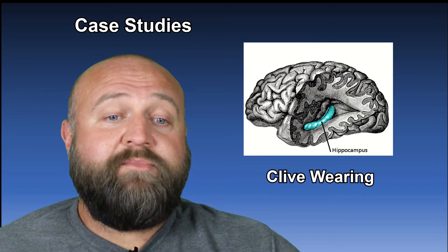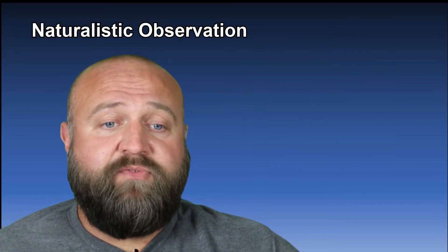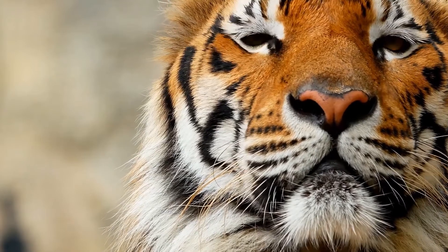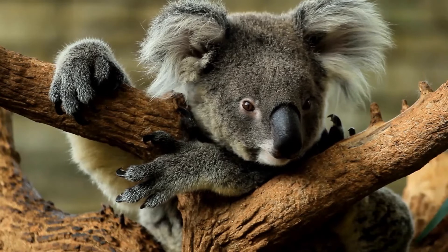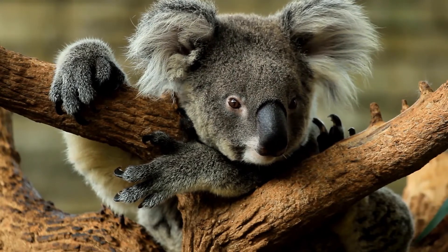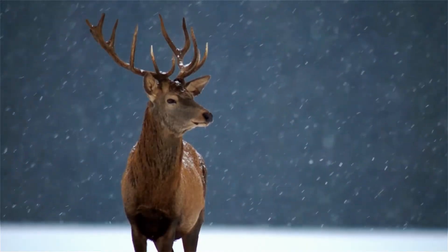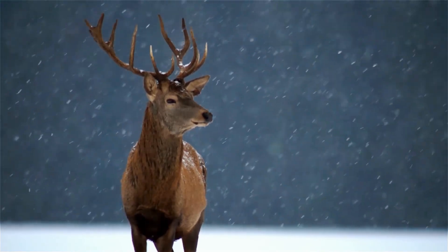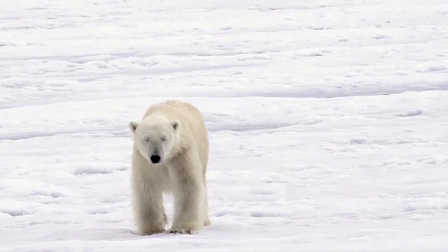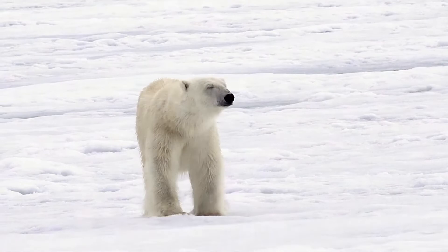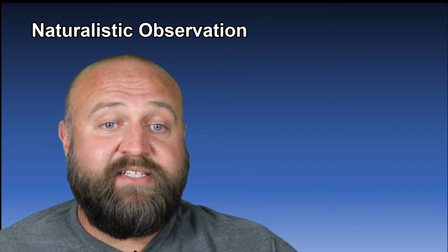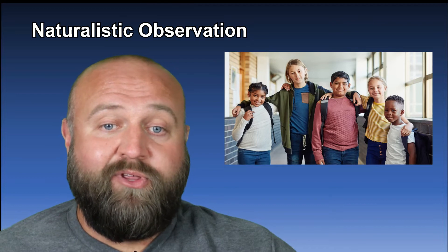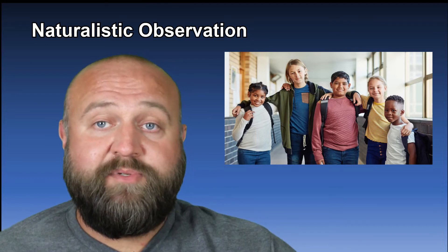Moving on, we come to naturalistic observations. When I think of naturalistic observations, I think of a nature documentary — the ones where you watch animals in the wild and learn about how they hunt, mate, raise their young, and just live their lives. This is kind of like a naturalistic observation. With naturalistic observations, researchers observe people in their natural setting. For example, if you want to see how kids interact with other kids, you could go to a school, sit and watch, and make notes on what you observe.